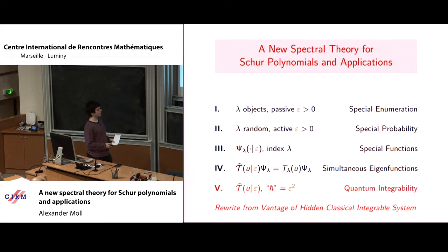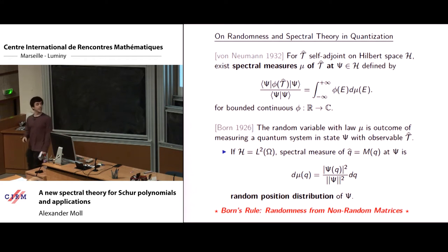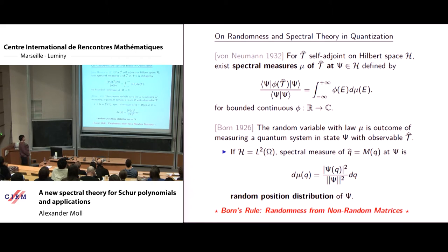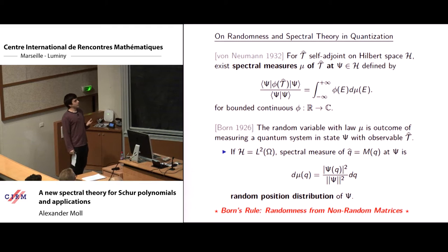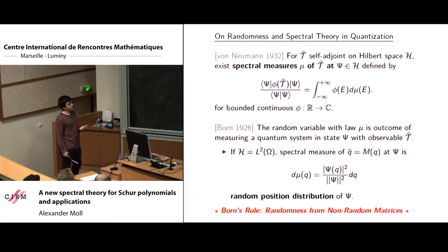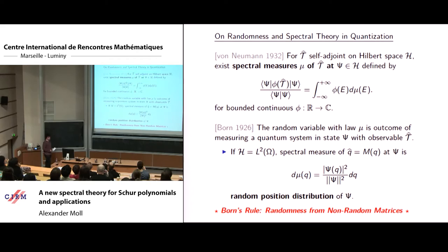Before we begin, let me show a couple of pictures. The most important definition in the talk is given here — this is a general definition. The screen is really big, I'll step back. This is the spectral theorem, formulated for not necessarily bounded self-adjoint operators. It says that if you have a self-adjoint operator on a Hilbert space, you can find some probability measures mu such that the following identity holds: for all test functions phi, this matrix element on the left-hand side can be written as the moment of mu on the right-hand side.